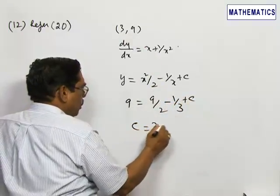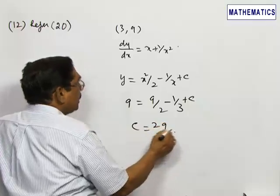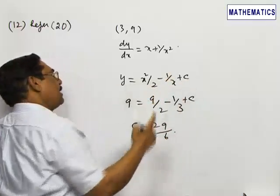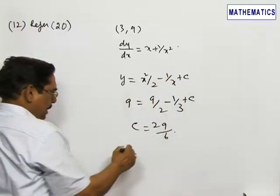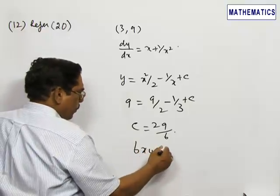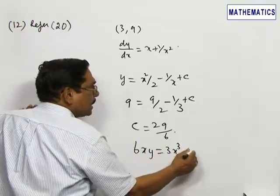you get the equation as 6xy = 3x³ - 6 + 29x.